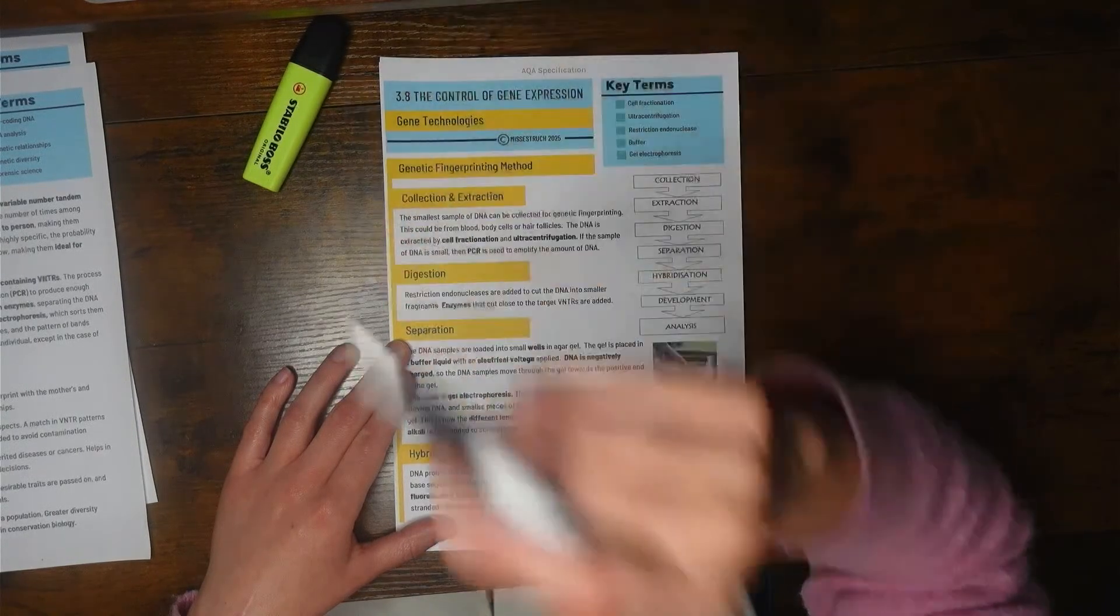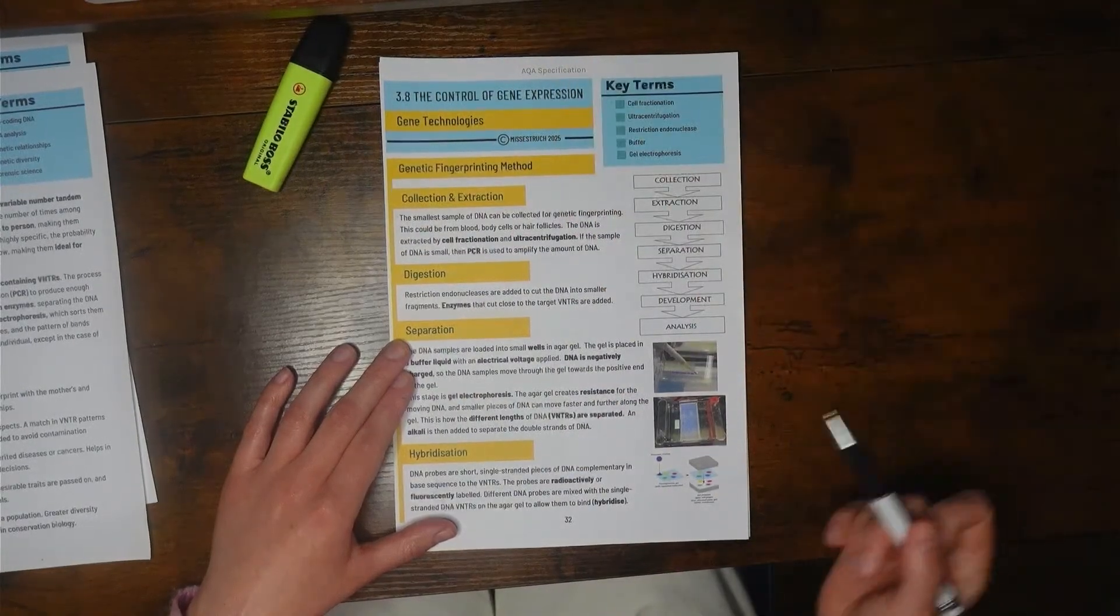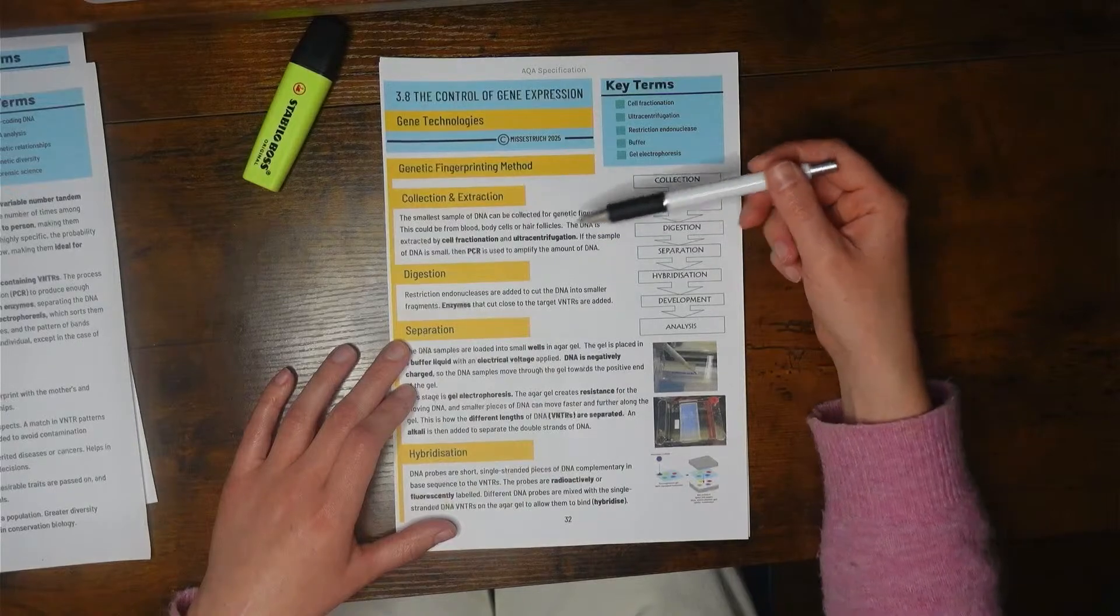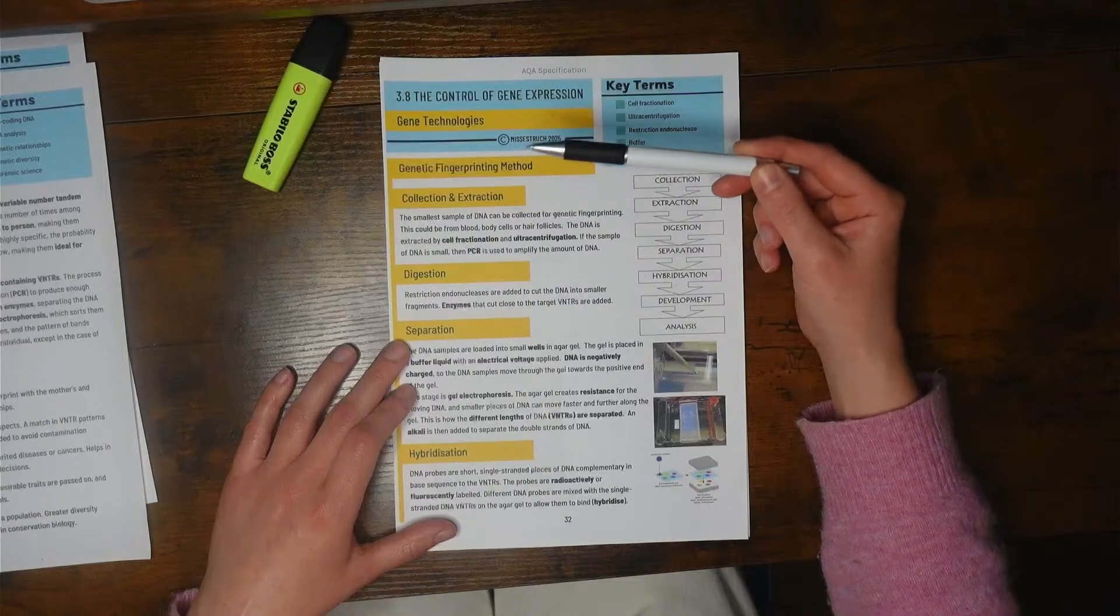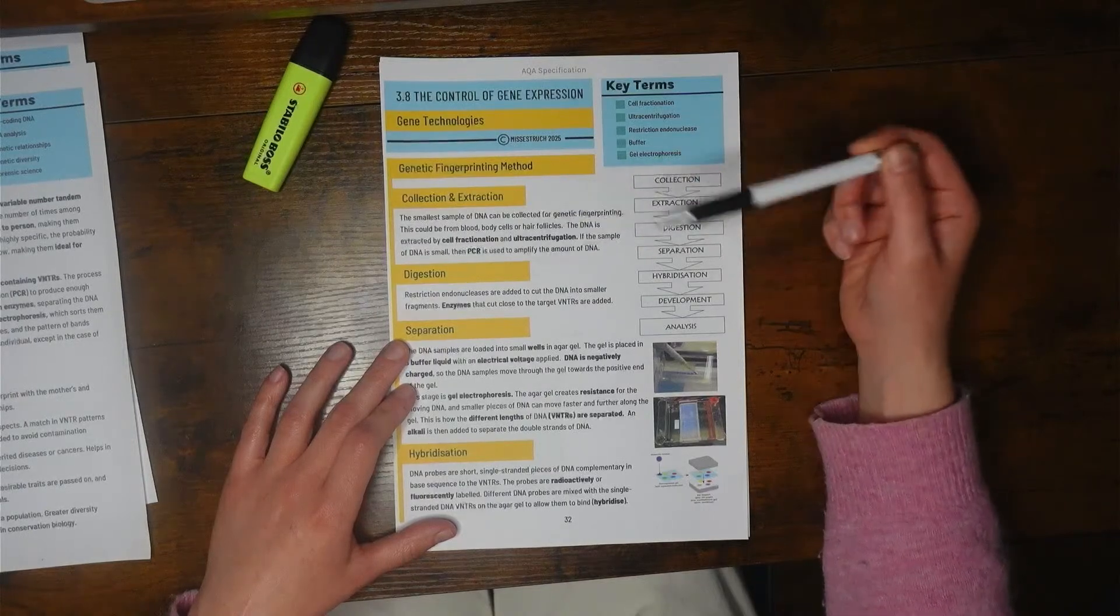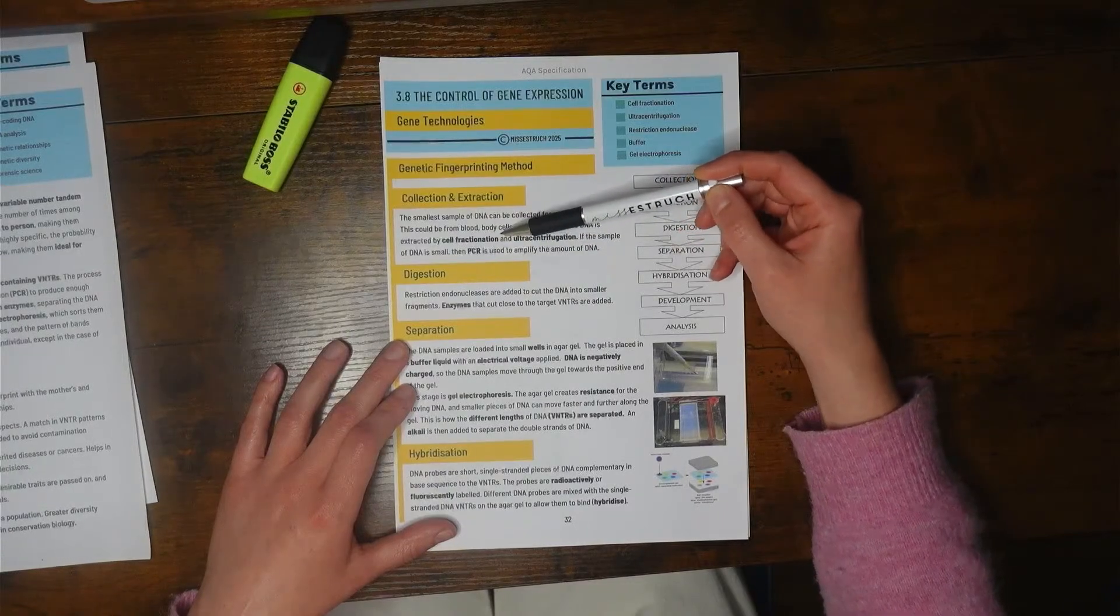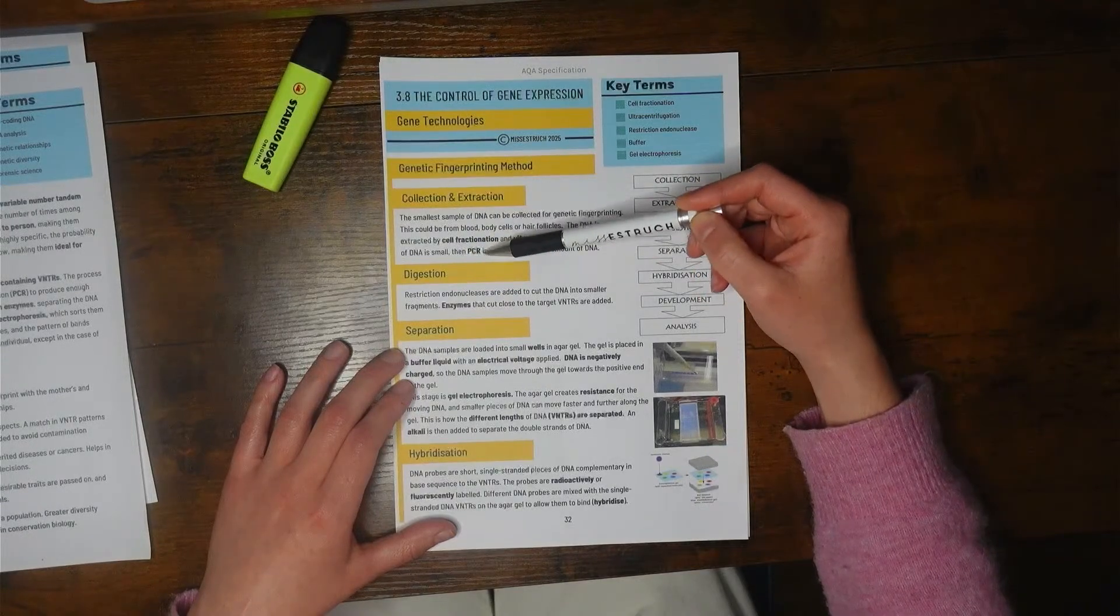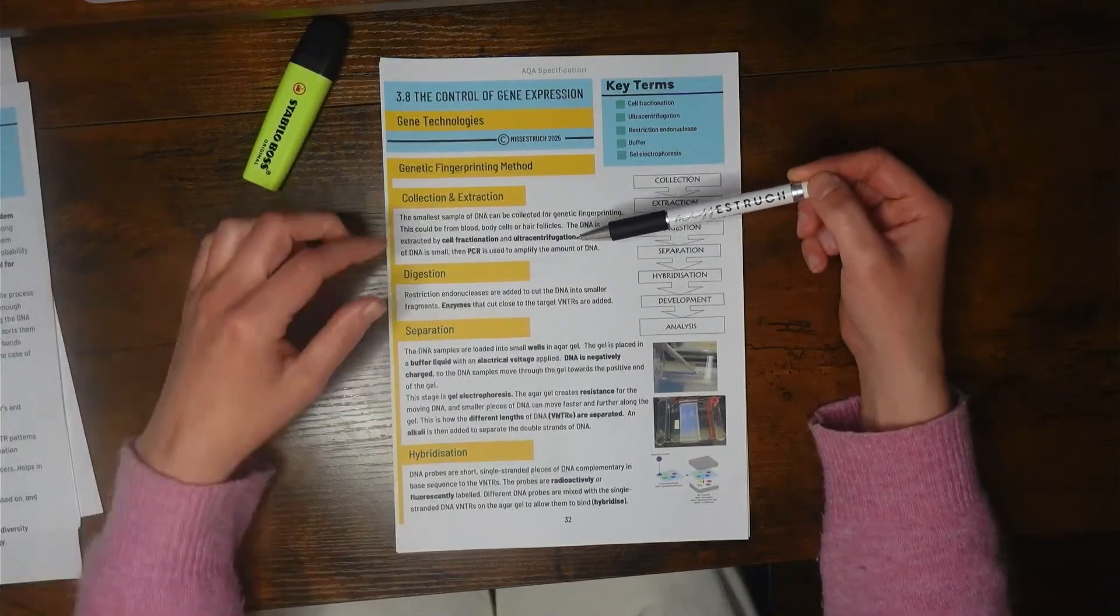Collection is when you collect your sample. If you are deliberately testing an individual who's volunteering, you can easily collect it from body cells such as hair follicles or a cheek swab, blood, or basically any cell that has a nucleus with DNA. There's an overlap with topic two because to extract that DNA you'd need to do cell fractionation and ultra centrifugation. Once you've got your sample, we use PCR to get large quantities of it.